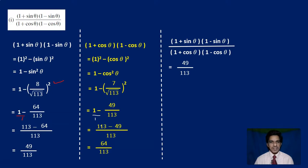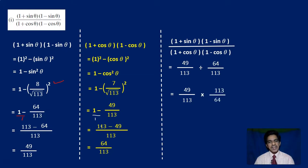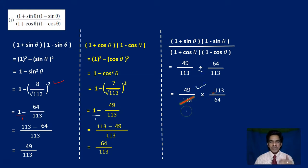Now we divide the numerator by the denominator: 49 by 113 divided by 64 by 113. To divide fractions, write the first fraction as it is, convert division to multiplication, and write the reciprocal of the second fraction. So 64 by 113 becomes 113 by 64. The 113 and 113 cancel, leaving 49 by 64. So the answer to the first problem is 49 by 64.